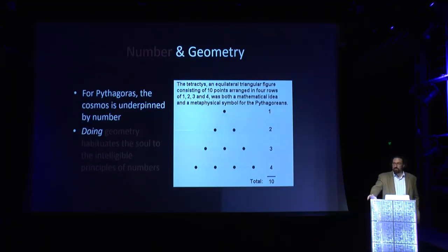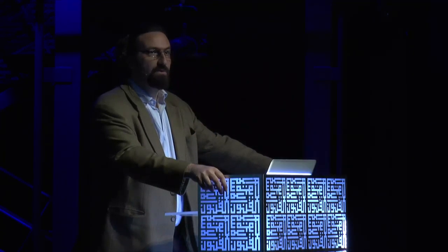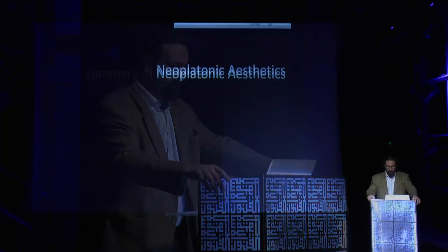For Pythagoras, 'number' refers not to integers like one, two, three, four, but to the principles behind them that underpin emanation and creation. We don't actually see numbers in the natural world, but they have an invisible presence as principles. In the academy he established in southern Italy, doing geometry was a means of habituating the soul for a better understanding of the numerical underpinning of the cosmos.